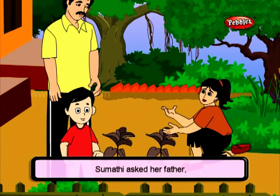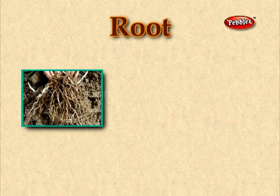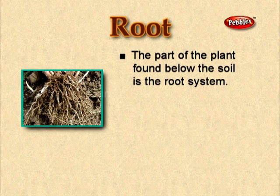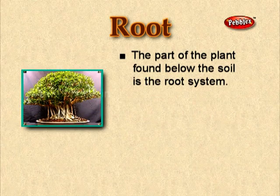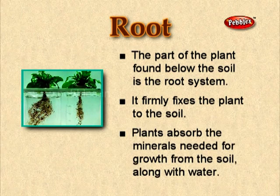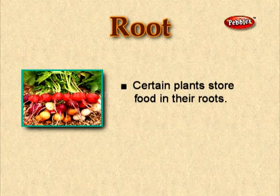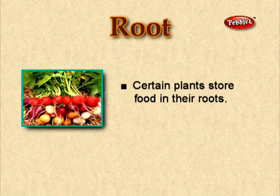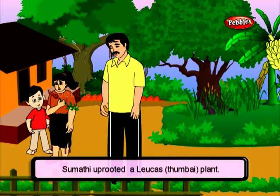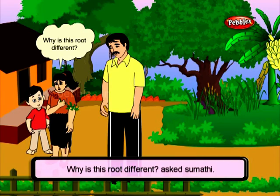Sumati asked her father, 'What does the root look like?' Father uprooted a grass and started describing it. The part of the plant found below the soil is the root system. It firmly fixes the plant to the soil. Plants absorb the minerals needed for growth from the soil along with water. Certain plants store food in their roots. Sumati uprooted a Tumbai plant and found the root of Tumbai different from the root of grass. 'Why is this root different?' asked Sumati.